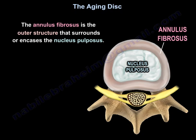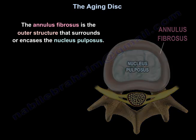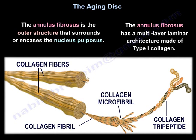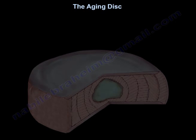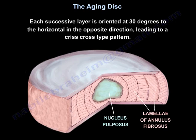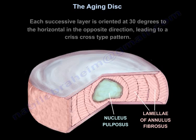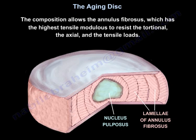The annulus fibrosis is the outer structure that surrounds and encases the nucleus pulposus. It has a multi-layer laminar architecture made of type 1 collagen. Each successive layer is oriented at 30 degrees to the horizontal in the opposite direction, creating a criss-cross pattern. This composition allows the annulus, which has the highest tensile modulus, to resist torsional, axial, and tensile loads.